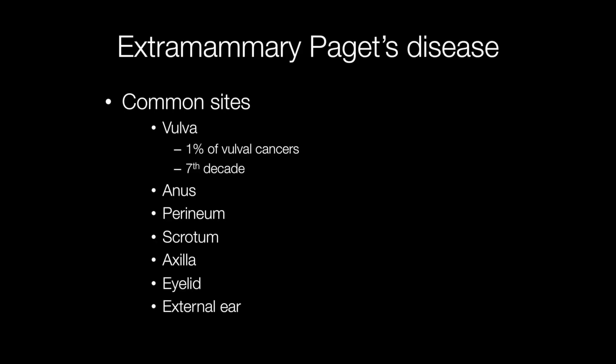Sites where extramammary Paget's disease can occur include the vulva, where they account for around 1% of vulval cancers, the commoner age being around the 7th decade. Other sites include anus, perineum, scrotum, axilla, eyelid, and the external ear.